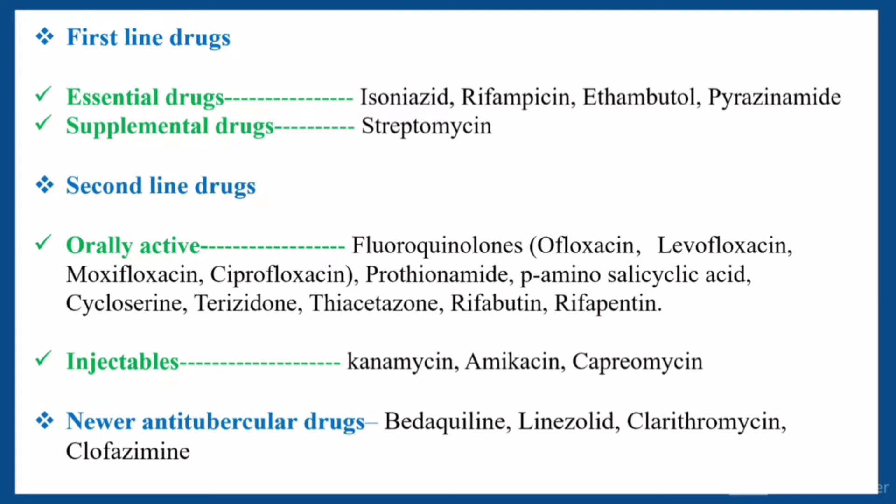Under essential drugs, examples are isoniazid, rifampicin, ethambutol, and pyrazinamide. Under supplemental drugs, there is only one: streptomycin. The second line drugs are classified into two types: orally active and injectables.